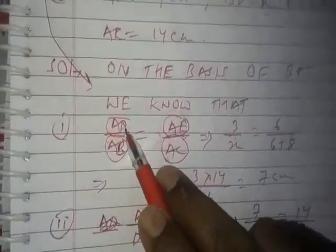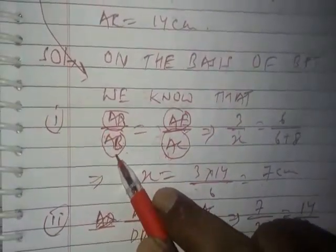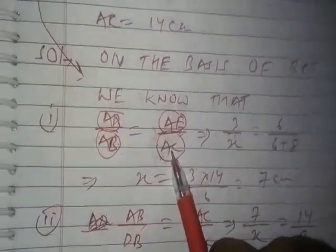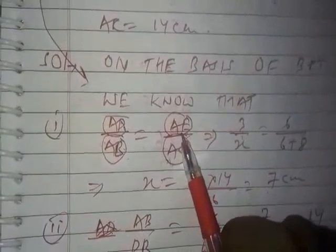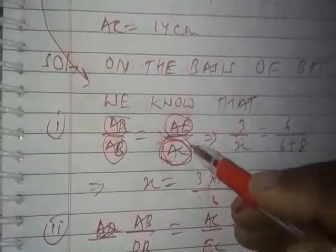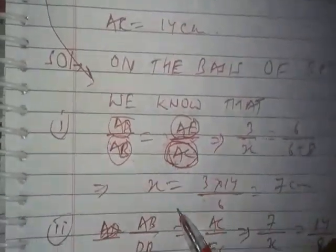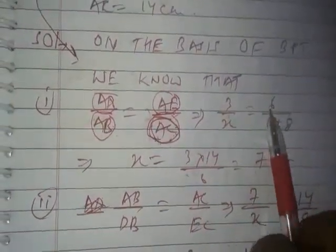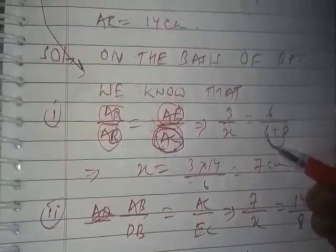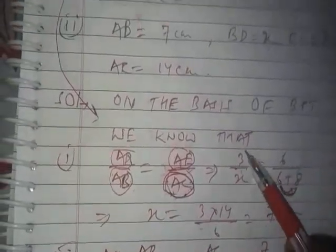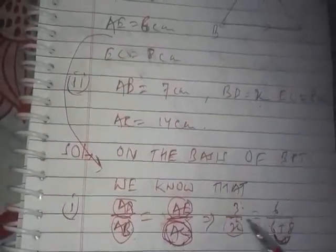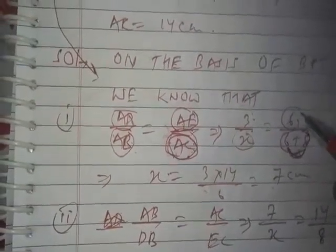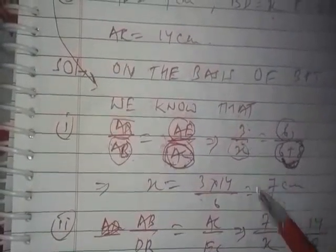So AD/AB equals AE/AC. AD is the upper segment and AB is the whole segment. AD is known as 3 so we write 3/X. For AE/AC: since both AE and EC are known, AC equals AE plus EC, which is 6 plus the lower segment. The ratio of upper to whole segment equals that of the other side. Solving this we get X equals 7 centimeters.